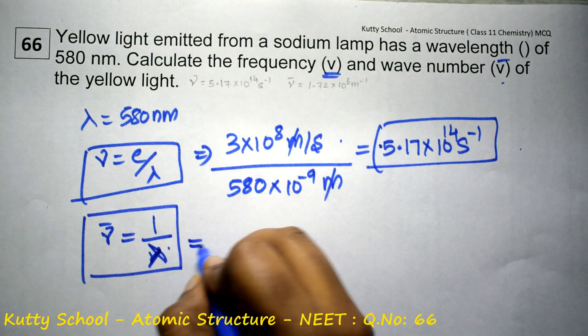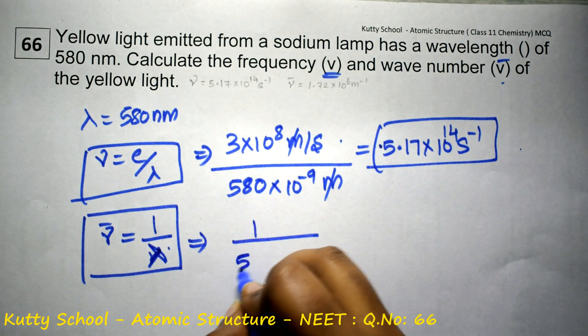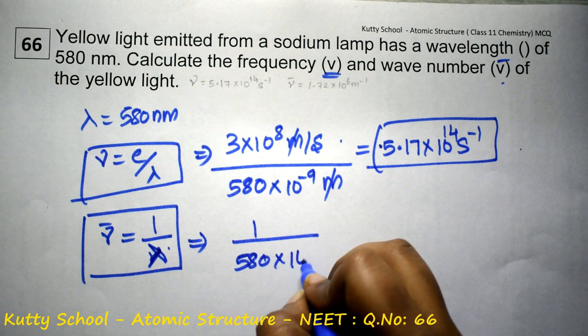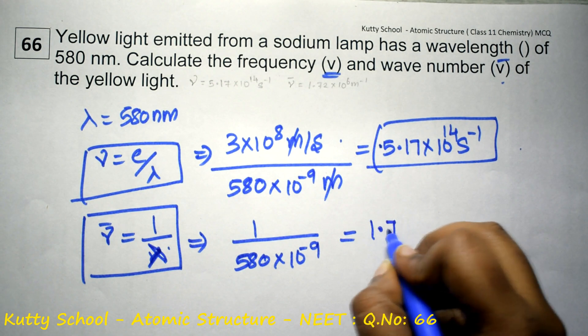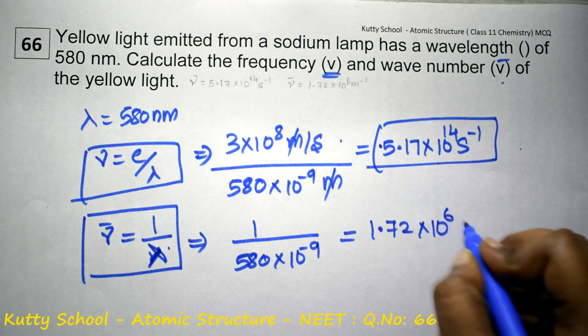Nu bar is equal to 1 by lambda. That is equal to 1 by 580 into 10 power minus 9, which equals 1.72 into 10 power 6 meter inverse.